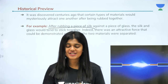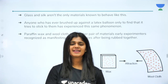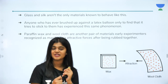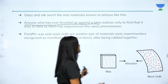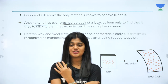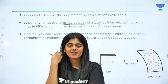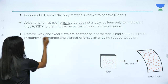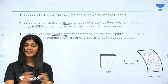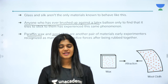This was not just for glass and silk. Some other objects also showed the same kind of behavior. For example, a latex balloon — if you touch it, they try to stick to you. Similarly, paraffin wax and wool cloth are different materials where the same type of attractive forces were observed when rubbed against each other. When wax and wool cloth are rubbed together, they attracted each other.